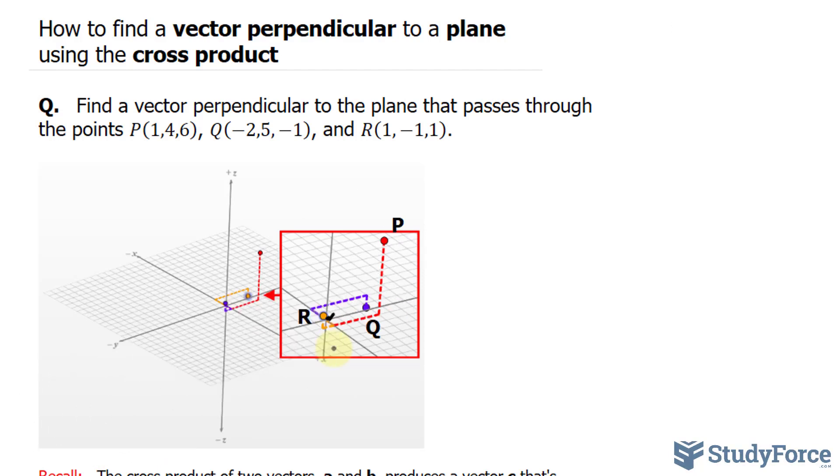What we can do is extend a line from point P to Q, and another line from point P to R. This will generate two vectors that have X, Y, and Z components. We can find these components by subtracting the coordinates of one point with the coordinates of the other. Eventually, we'll end up with two vectors.